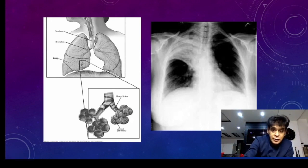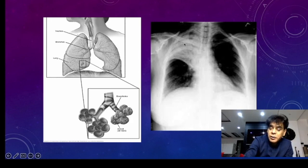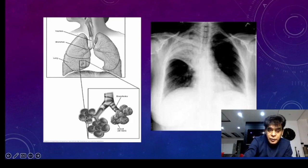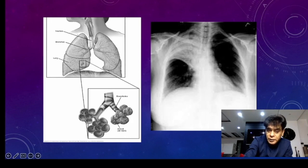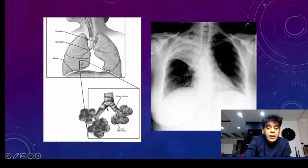Why are we seeing this air bronchogram? Because of the pathology in the alveoli, which is making it bright. The pathology in the alveoli can be in the form of secretions or a mass, which is changing its look from black to white. Or it can be the collapse of the lung.